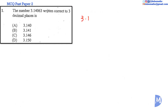3.14063, written correct to three decimal places — 1, 2, 3. The first number to be discarded is 6. 6 is 5 or greater, so we add 1 to the last digit retained. We get 3.141. The answer is B.